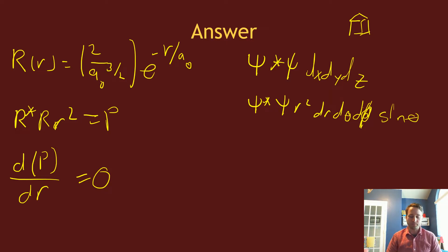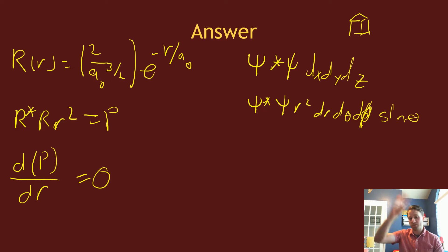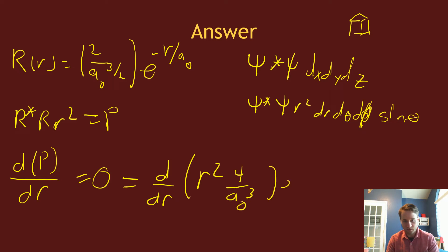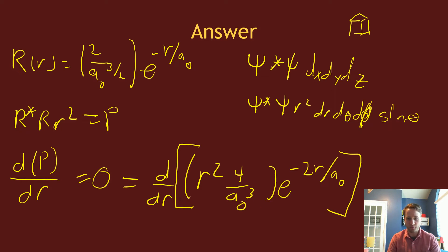Setting dP/dr = 0 gives us the minimum or maximum of the function. In this case there's only going to be a maximum — the function goes from zero up to some positive value and back down to zero. So we need to solve the derivative with respect to r of r² times (4/a₀³) · e^(−2r/a₀) and set it equal to zero.